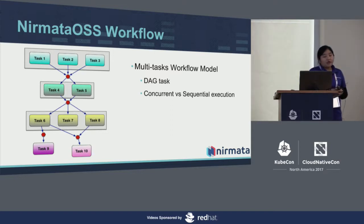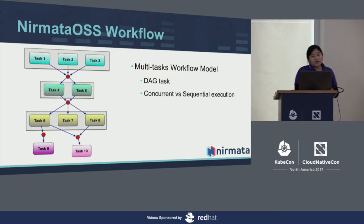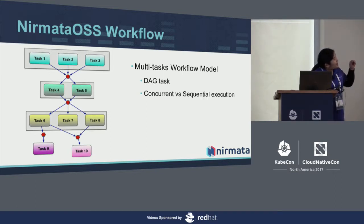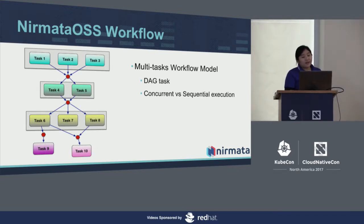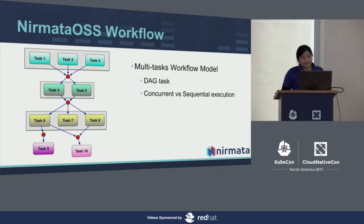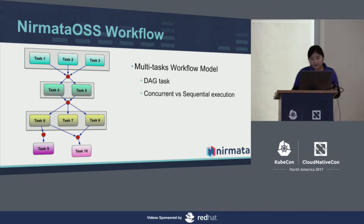This diagram shows how we manage task dependency. The task dependency is represented by a directed acyclic graph. Tasks with no dependencies, like task 1, task 2, and task 3, can be executed concurrently. But task 4 and task 5, for example, should wait for tasks 1, 2, and 3 to finish executing before they start. So we can handle both concurrent and sequential task execution.